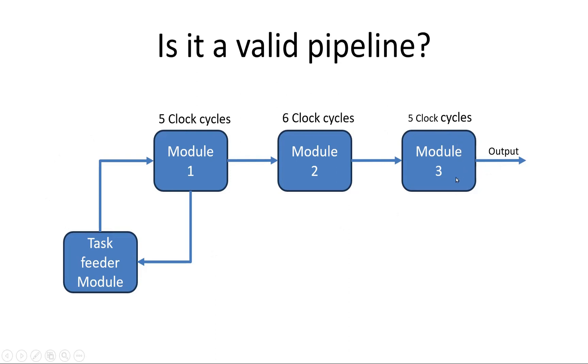Just to speed up the things and to improve the performance of the overall system, I am taking feedback from module 1. Whenever module 1 does its task, it gives feedback to task feeder module and it can assign a new task to module 1. The task completed by module 1 is fed to module 2, and task completed by module 2 is fed to module 3, and then we get the final output.